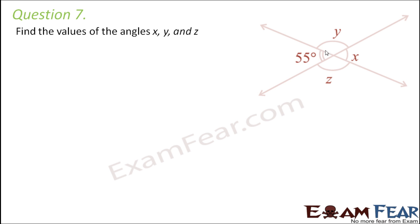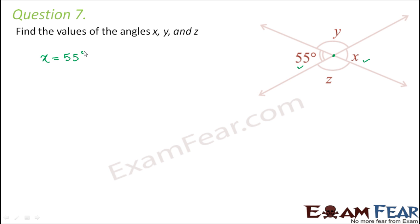In this diagram, let us first focus on x. These are two intersecting lines intersecting at a point, and 55 degrees and x are vertically opposite angles. We know that vertically opposite angles are always equal. Therefore x is equal to 55 degrees, because they are vertically opposite angles. So we found out the value of x.